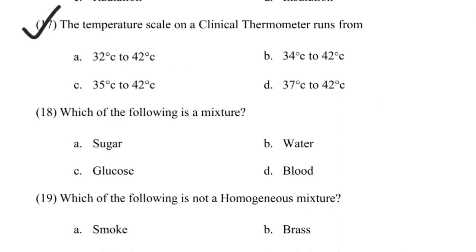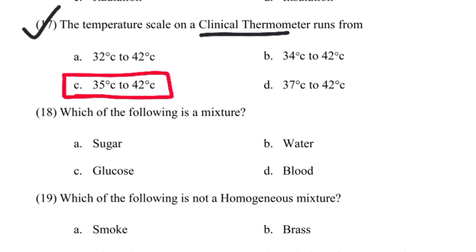The temperature scale on the clinical thermometer runs from dash. The correct answer is 35 degrees Celsius to 42 degrees Celsius. The clinical thermometer shows readings from 35°C to 42°C, and this is mentioned in the basic science textbook.